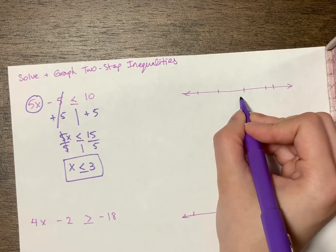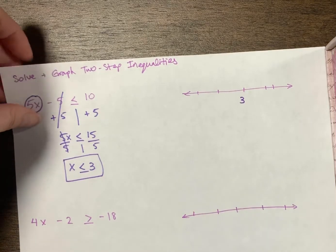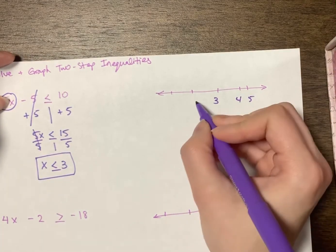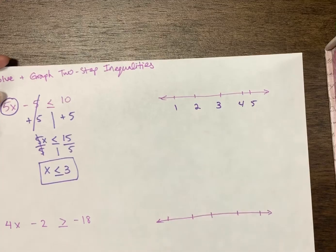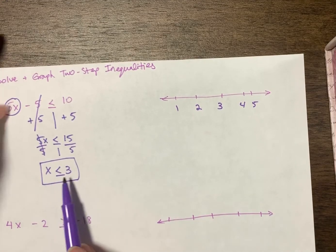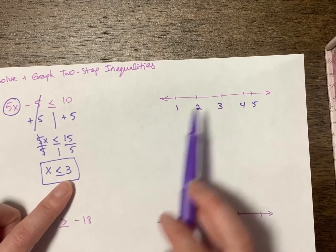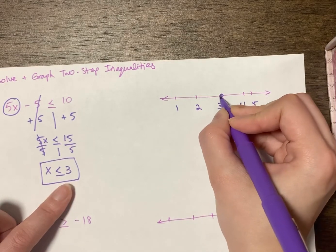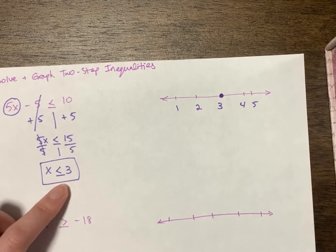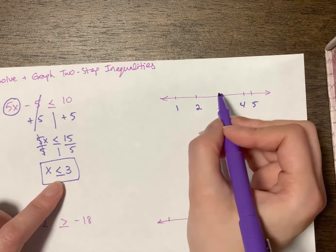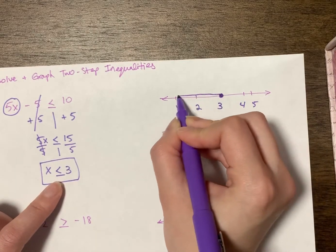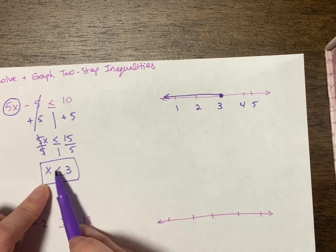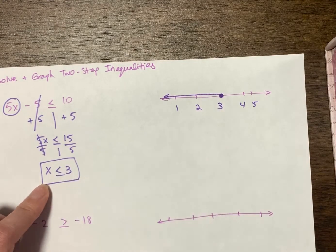When I graph, I place three in the center, with four and five to the right, and two and one to the left. At three, I put a closed circle because it's less than or equal to — the 'or equal to' means closed circle. x can be less than or equal to three, so less than means I go to the left — all numbers getting smaller and more negative. The arrow points to the left.